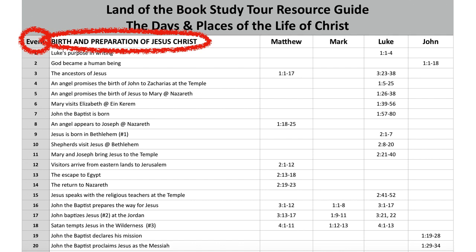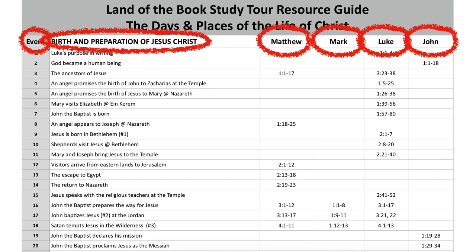You notice the first column only has six entries before Mark has anything, while Luke starts earlier. These are chronological, by the way. So you see there are the four Gospels on the right, the event number, and then the description of the event. God becoming a human being — that's the incarnation of Christ — is only mentioned in the Gospel of John, that far right column, chapter one, those first 18 verses.